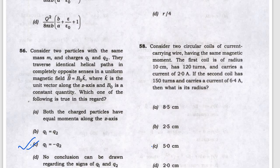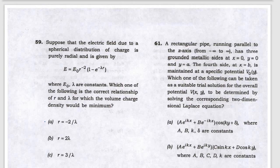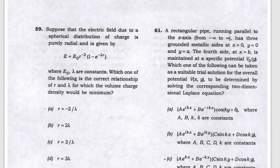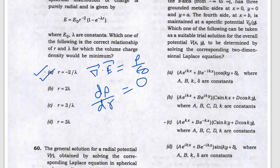Next, a coil with a given magnetic field — they are asking for the radius, which will be 5 cm. Next, the electrostatic problem — charge will be minimum. Setting the divergence of E equal to ρ/ε₀ and solving dρ/dr = 0 gives answer E.